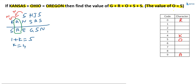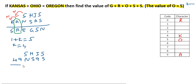Now we know four values. Substitute these into the equation: OHIO becomes 5-H-I-5, K is equal to 4, A is equal to 9. So KANSAS becomes 4-9-N-S-9-S, and ORIGIN becomes 5-9-E-G-5-N.